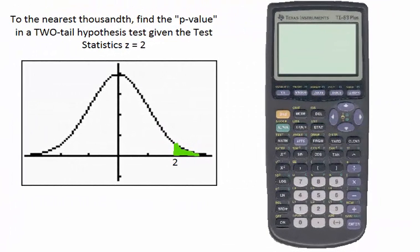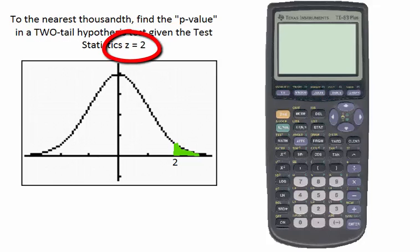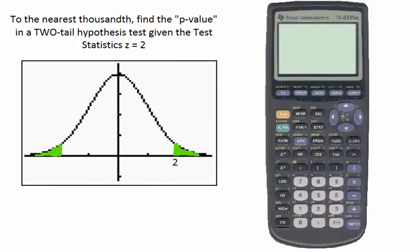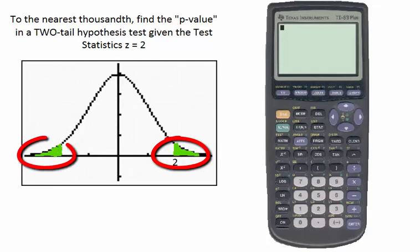Finally, in this problem we're asked to find to the nearest thousandths the p-value for a two-tail hypothesis test with the test statistic z equal to 2. The answer is found in much the same way as for a right-tail test where z equals positive 2. However, the difference is that in a right-tail test the area is only the area in the right tail, while for a two-tail test the p-value is that area under the right tail multiplied by 2.